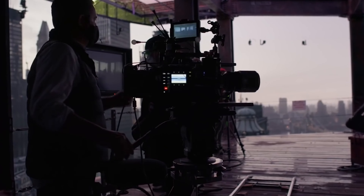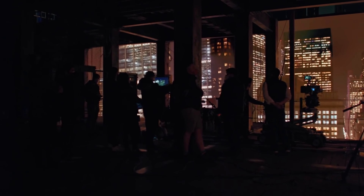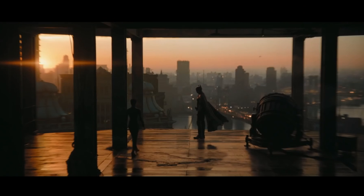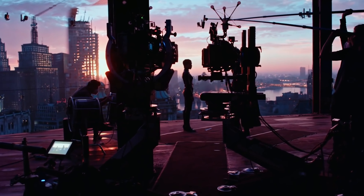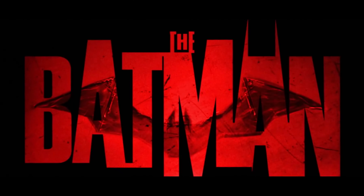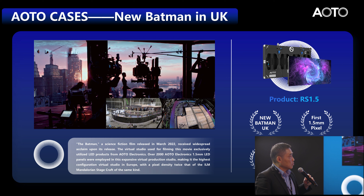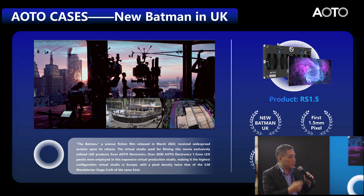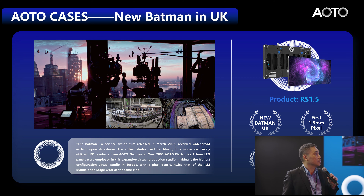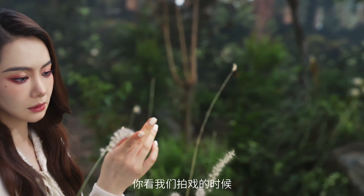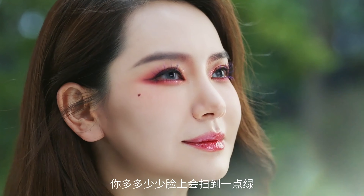This is an installation in London, UK, for Batman. They used exactly the same 1.5mm pitch screen as this one. We need the 1.5mm pitch because the finer pitch allows you to get much closer shots to the screen easily — for example, for sunset scenes where the actor walks close to the screen.